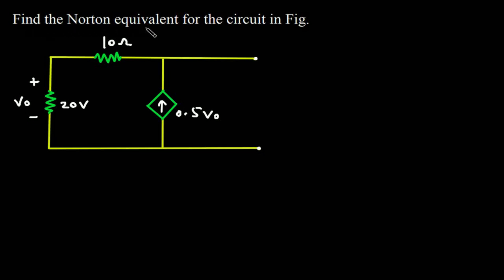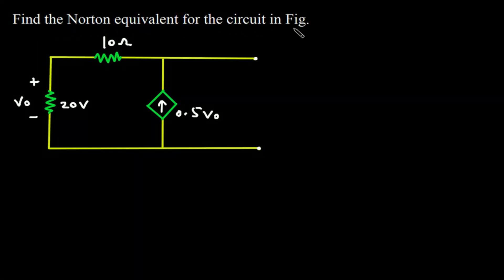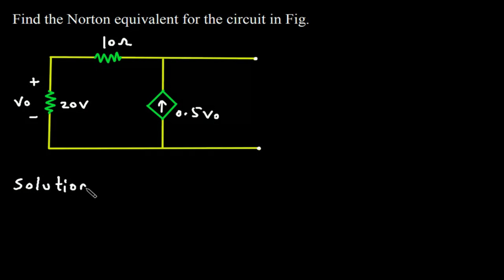Find the Norton equivalent for the circuit in figure. We have to find the Norton equivalent for this circuit. First of all we will redraw the circuit.